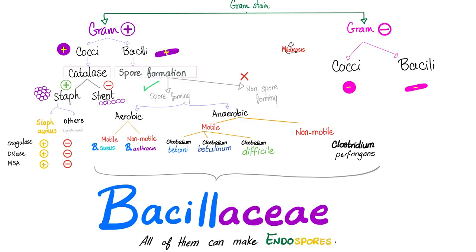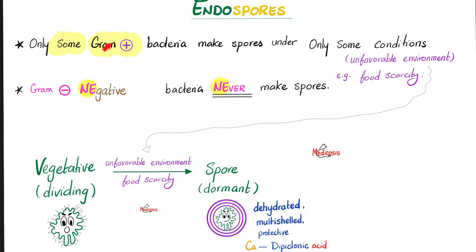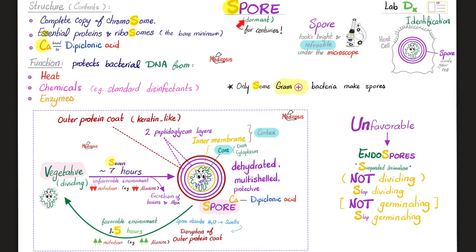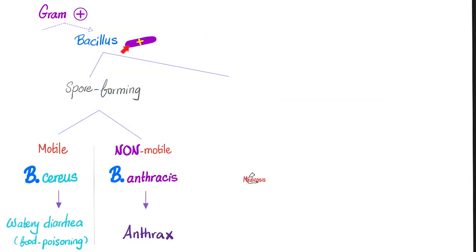So we have three types of anthrax: cutaneous anthrax, inhalation anthrax, and gastrointestinal anthrax. Anthrax is caused by Bacillus anthracis, which is a non-motile, aerobic, spore-forming, gram-positive rod. Anthrax can make spores, and these spores can remain dormant for decades, if not centuries. The spore protects the Bacillus anthracis bacteria from unfavorable environmental conditions. We talked about spores in previous videos — please pause and review. It's a gram-positive rod that is spore-forming and non-motile.